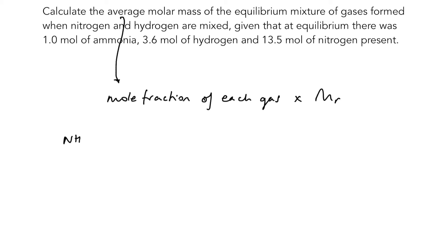NH3 - our mole fraction. We've got 1.0 mole of ammonia. The total number of moles of gases - that's 1.0 plus 3.6 plus 13.5 - comes to 18.1. We're going to multiply that by the molar mass for ammonia, 17.0 grams per mole, and that comes to 0.939.